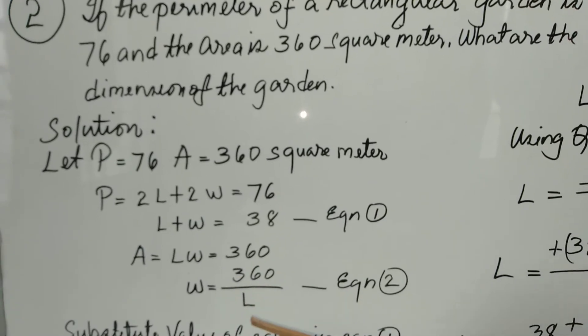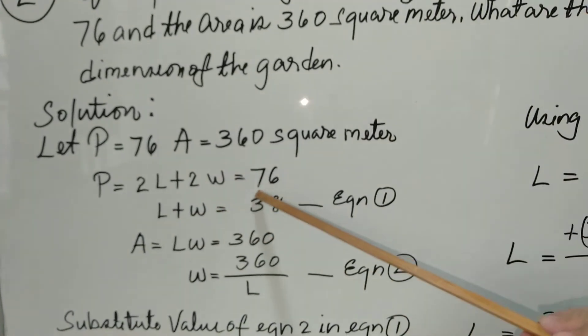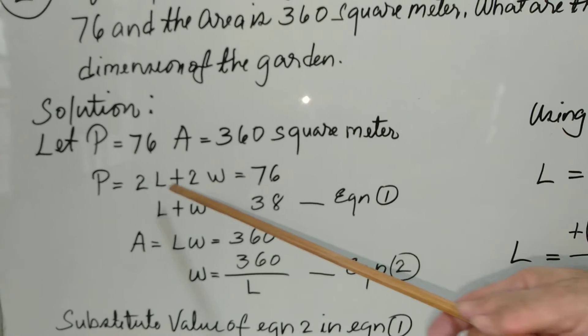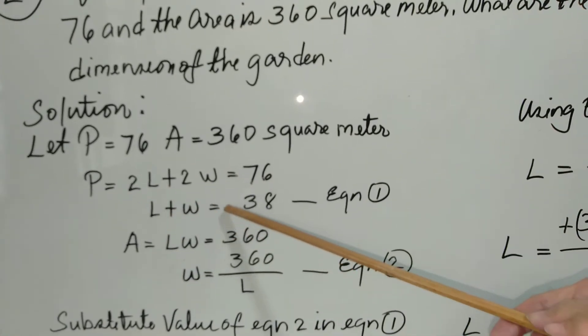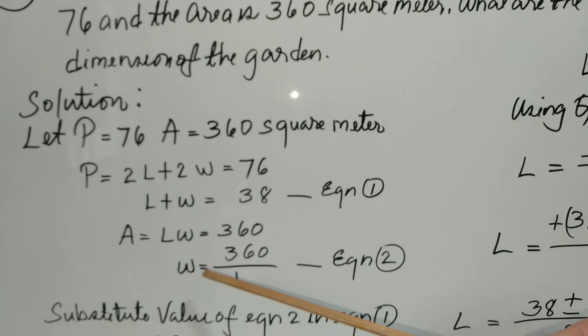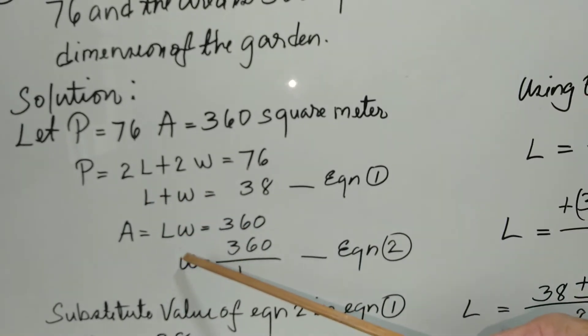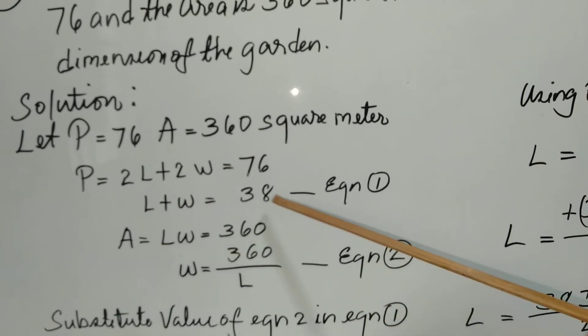As we know, the perimeter formula is 2L plus 2W equals 76, where L is length. We divide both sides of the equation by 2, so it becomes L plus W equals 38.